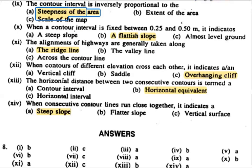Next question: The horizontal distance between two consecutive contour lines is called the horizontal equivalent. The vertical distance between consecutive contours is the contour interval.